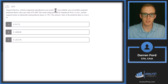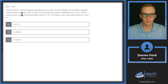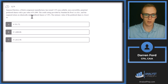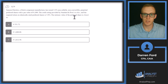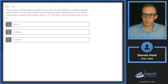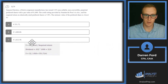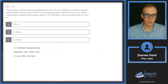Question 26: Samson Electrics, a Dutch component manufacturer, has issued 3.2% non-callable, non-convertible perpetual preferred shares with a par value of 1,000. The credit rating is AA-minus and the required return on identically rated preferred shares is 5.8%. The intrinsic value of the preferred share is closest to what? The preferred share intrinsic value formula is straightforward.